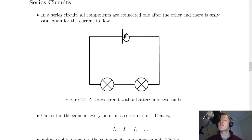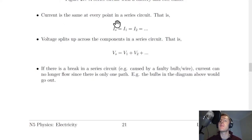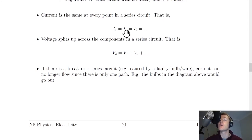In this circuit there's only one path for the current to flow. We're now going to look at two very important rules for current and voltage in a series circuit. The first rule is that current is the same at every point in a series circuit. We can say that the current passing through the supply — i.e. the battery — is equal to I1, which is equal to I2, and so on.